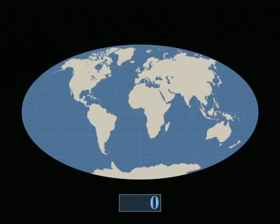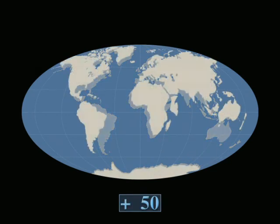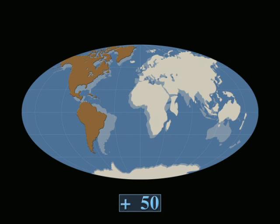50 million years from now, the world map will look quite different. The American plates will drift farther west, the Horn of Africa will separate from the continent, and Australia will have reached the equator.